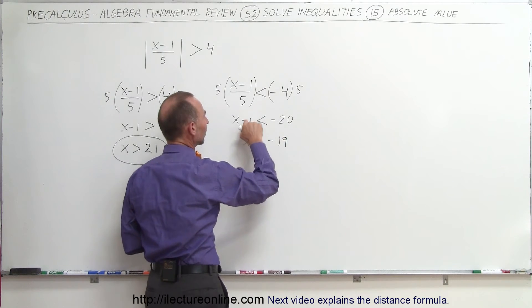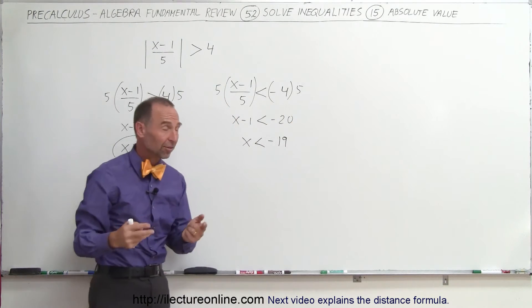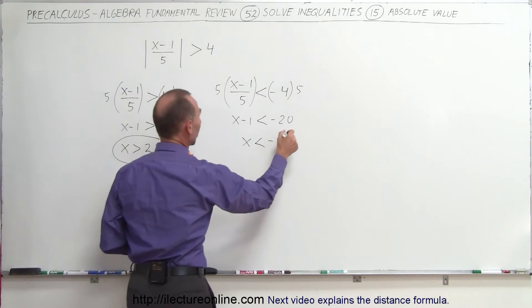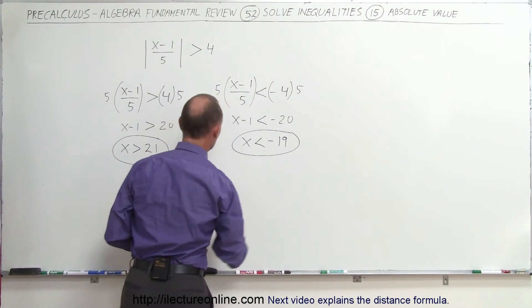Remember when the negative 1 goes across the other side, it becomes a positive 1. So we add it to minus 20. And here's the other part of the solution.